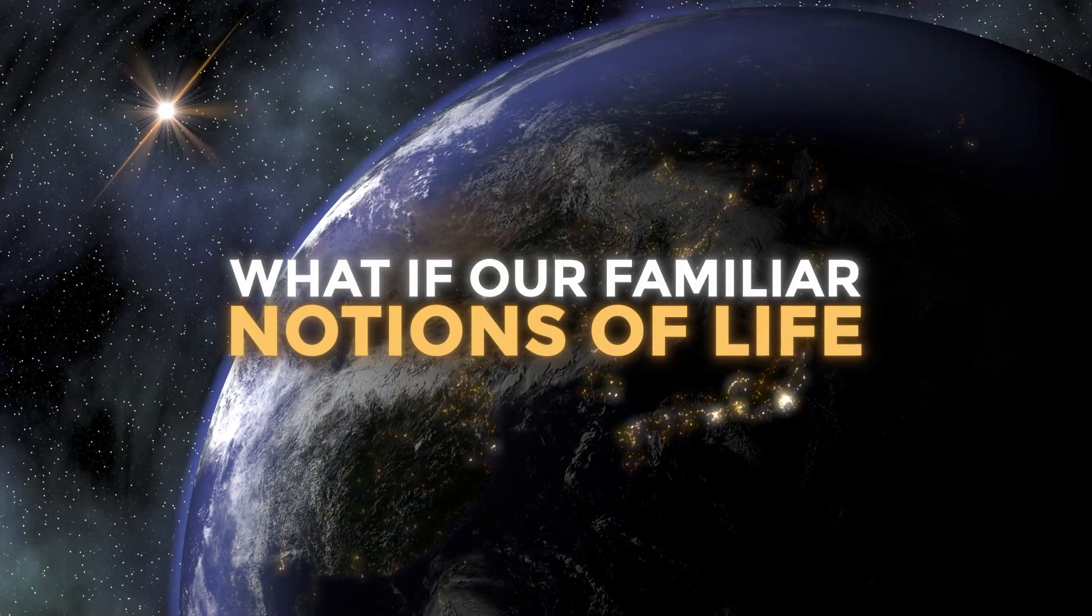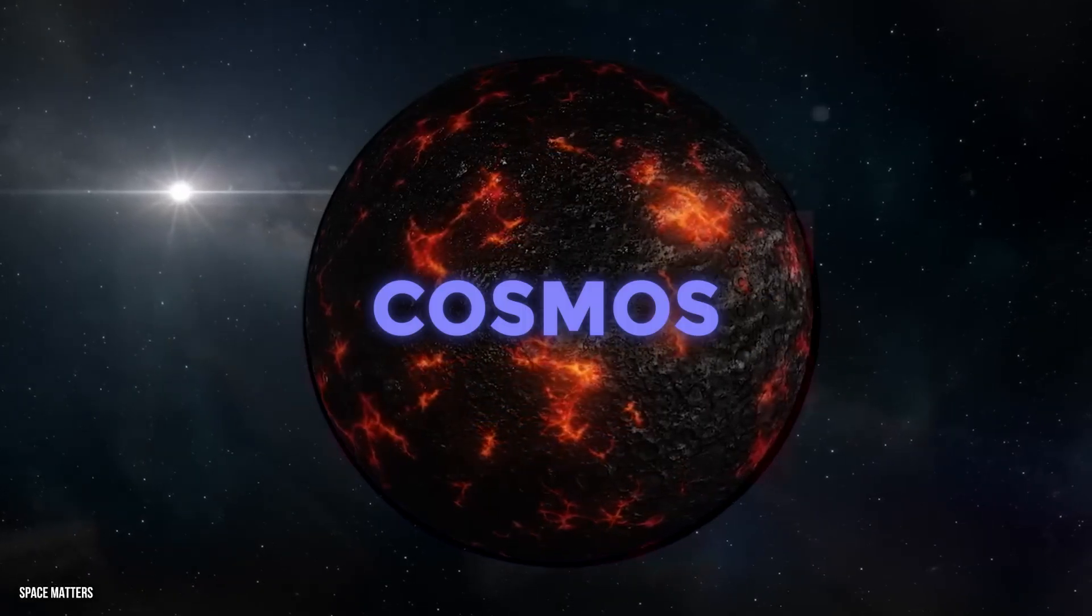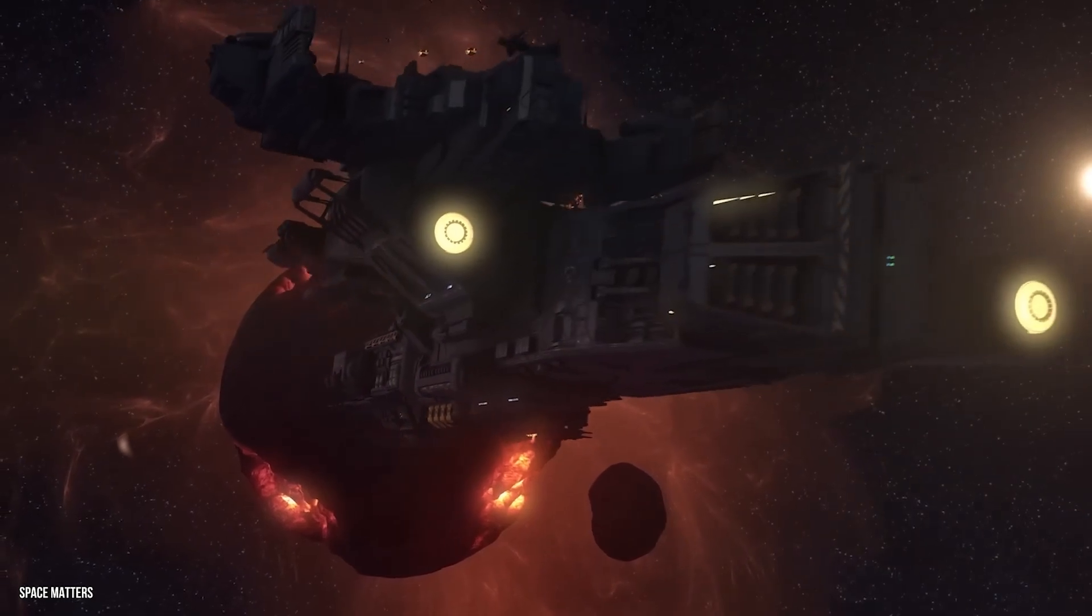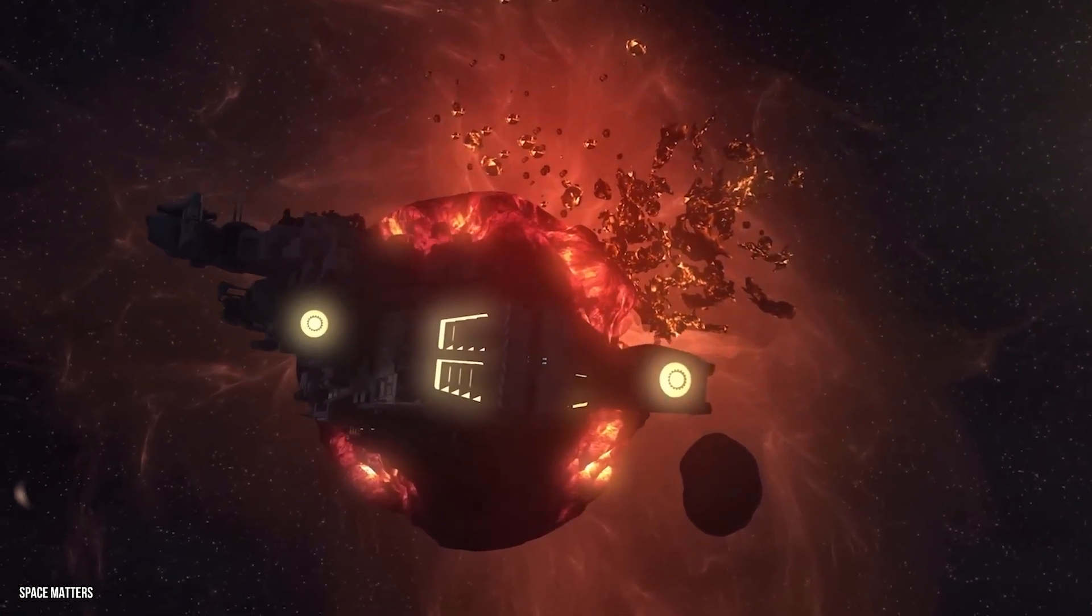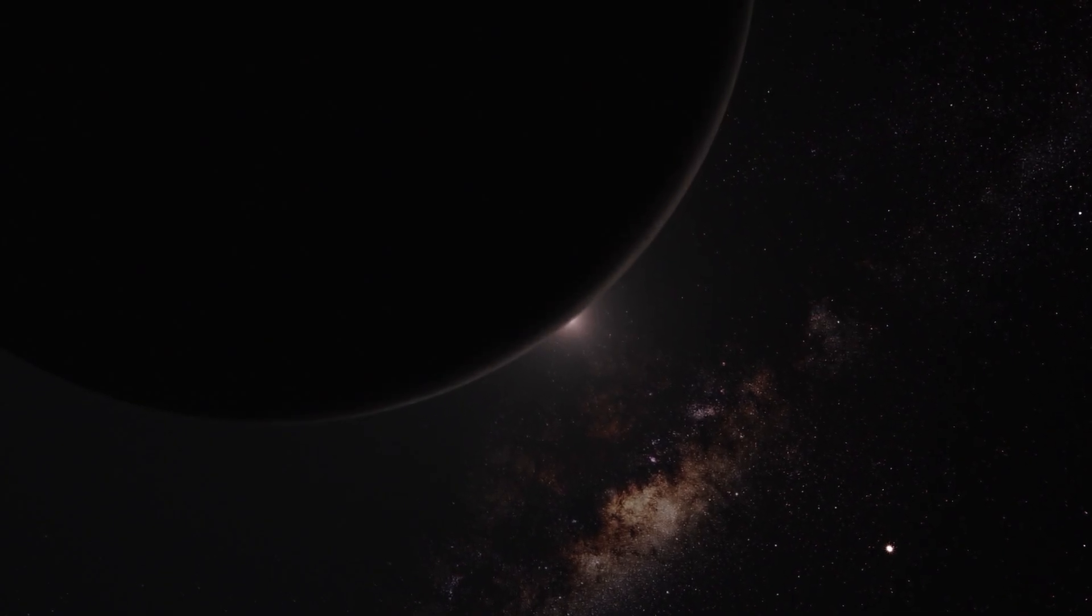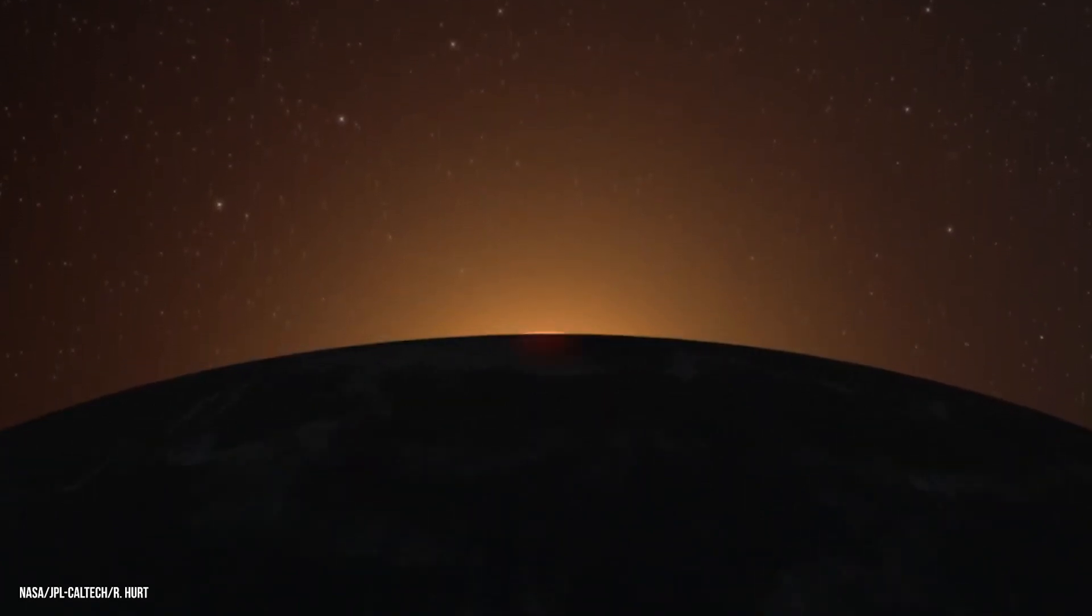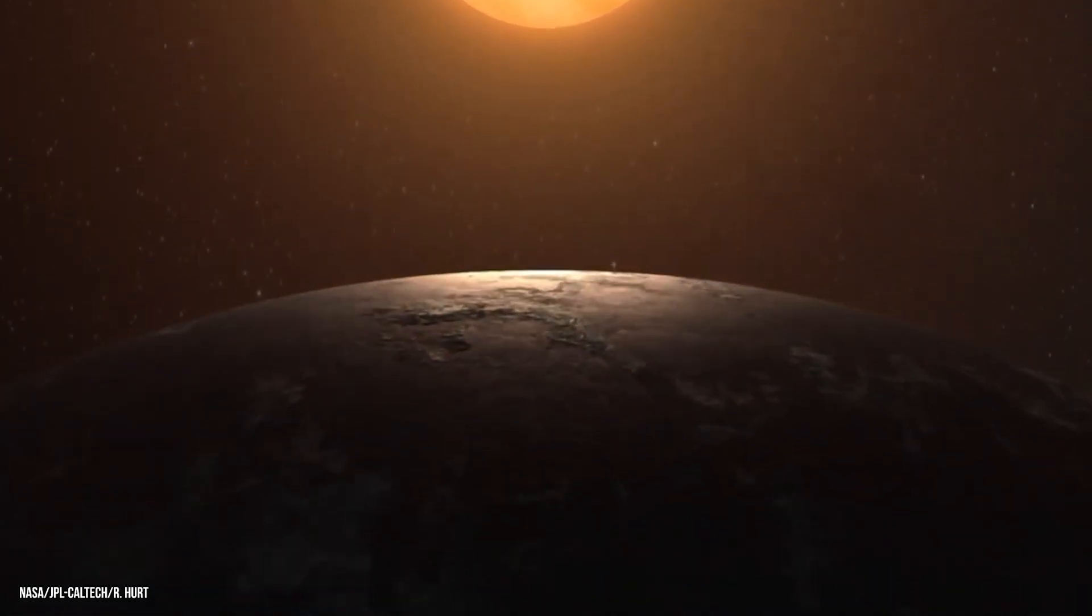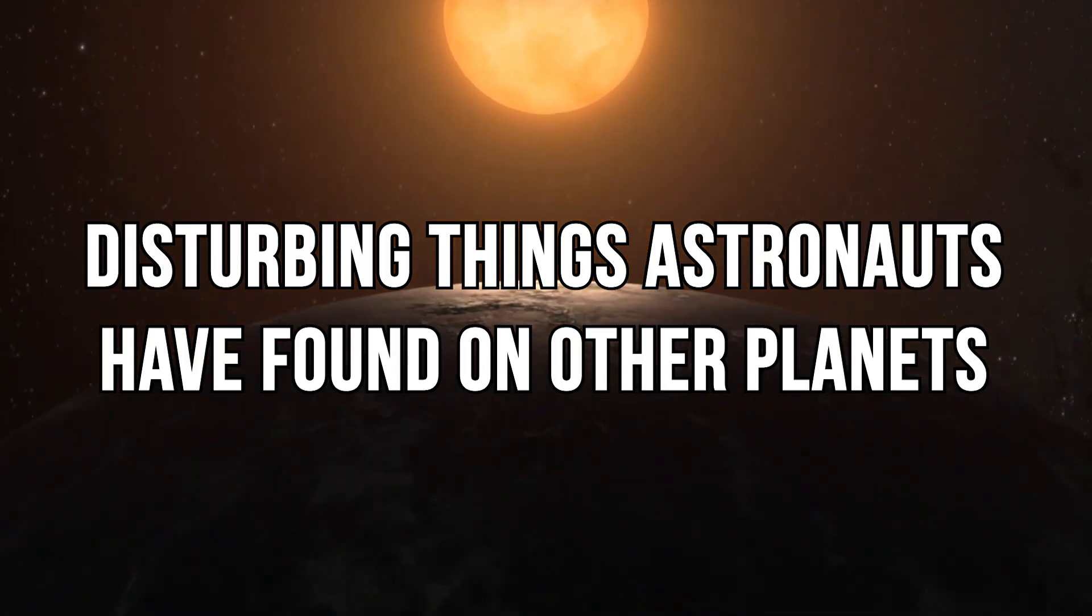What if our familiar notions of life were completely wrong, and the most inhospitable corners of the cosmos were teeming with life? Strap in for a cosmic journey that will rattle your perception of reality. From the haunting prospect of life thriving in the terminator zones of exoplanets to the bewildering phenomenon of an entire hemisphere ablaze with ceaseless volcanic activity, here are the disturbing things astronauts have found on other planets.